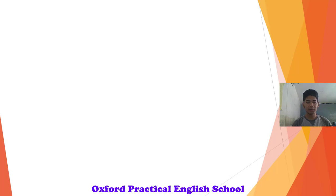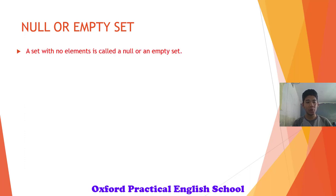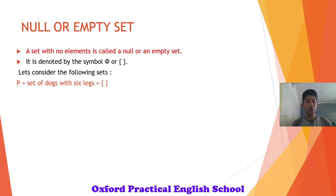And our next type of set is called null or empty set. The name says it all. A set with no elements is called null or an empty set. It is denoted by the symbol phi or curly brackets. Let's consider the following sets. Set P, set of dogs with 6 legs. Have we seen any dog with 6 legs? No, that's impossible. So that's why it does not have any elements and it is a null set.